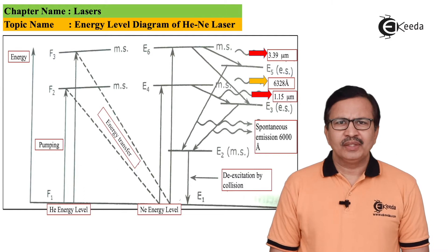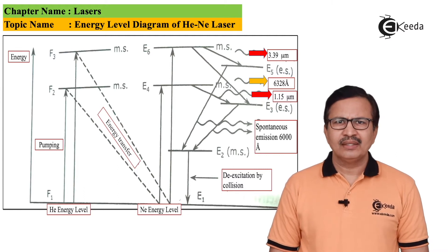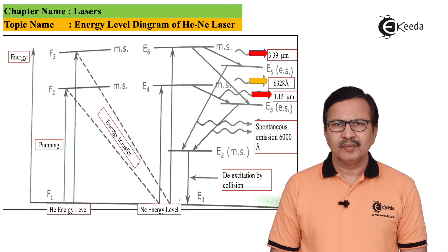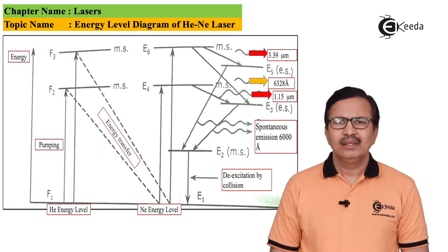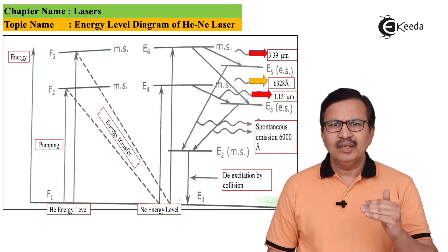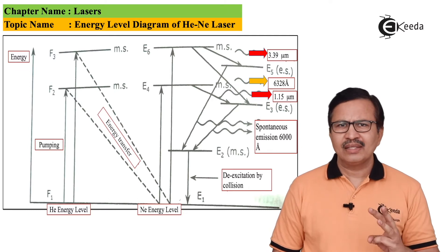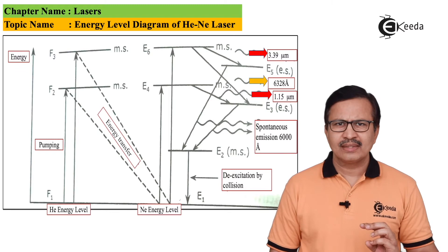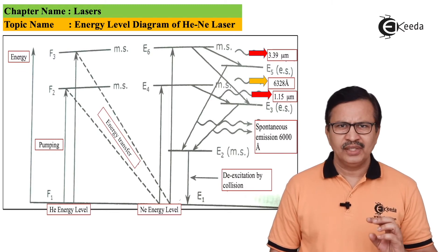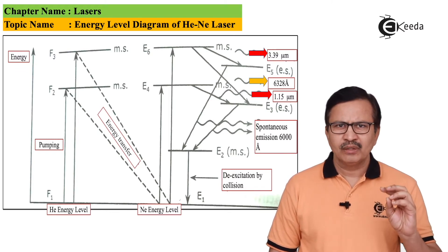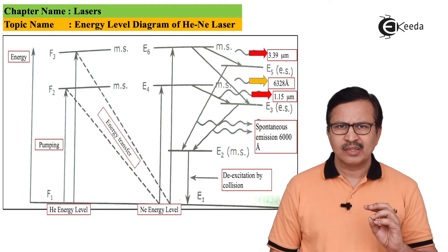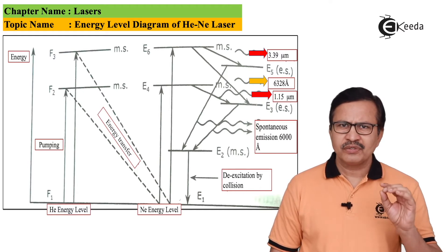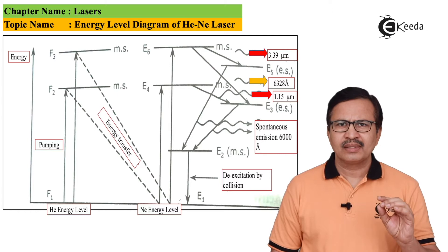To start with, we first study the energy level diagram of helium neon lasing material. Helium as a material has three energy levels: F1 which is the ground state, followed by F2 the first excited metastable state, and F3 which is the second excited metastable state.